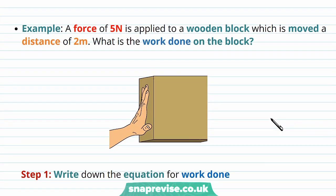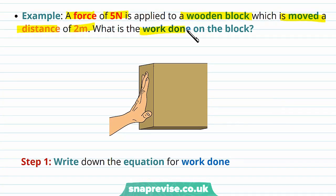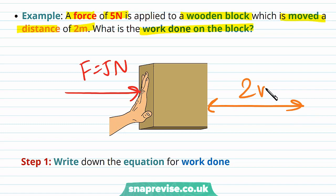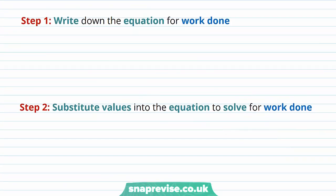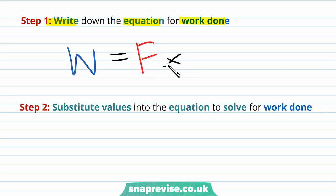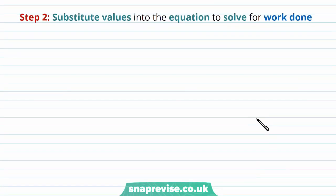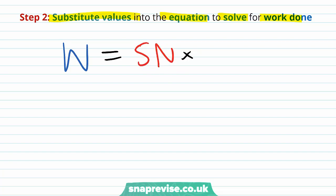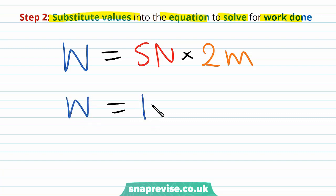Let's apply this equation to an example. A force of five newtons is applied to a wooden block which is moved a distance of two meters. What is the work done on the block? First, write down the equation: work done equals force multiplied by distance. Then substitute: work done equals five newtons times two meters, which gives us ten joules.